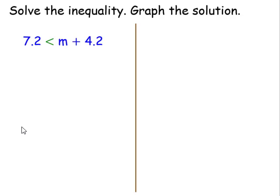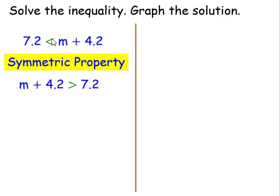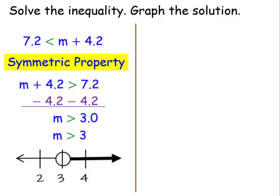Let's take a look at the next example. Since my variable is on the right-hand side, I'm going to use the symmetric property. The inequality symbol is pointing to the 7.2, and it continues to point to the 7.2 because I reversed it. What undoes addition? Subtraction. I'll subtract 4.2 from both sides, leaving me with m on the left-hand side is greater than 3.0. 3.0 is the same as 3. Since I don't have that equal to sign, I'm going to use an open circle, and I'm going to my right 3. This means that 3 is not part of the solution set. It's any number greater than 3, like 3.1 or 3.2 or even like 3.00001.